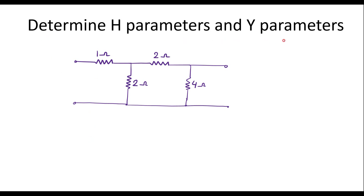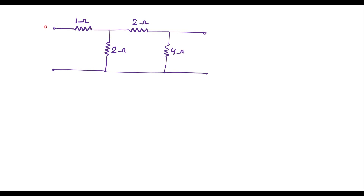In this problem we need to determine h parameters and y parameters for the given circuit. We are supposed to calculate hybrid parameters and admittance parameters, that is y parameters. First I will calculate y parameters, then I will calculate h parameters. Let me assume the input terminal is positive, this is negative. Let i1 be input current, i2 be output current, v1 be input voltage, and v2 be output voltage.